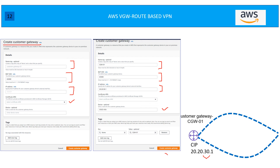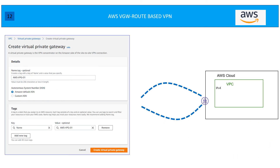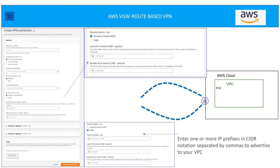The next thing you need to create is the Virtual Private Gateway. It's very simple — you put the name tag, for example awsvpg-01, and for the ASN you can either leave it to the default or mention your customer ASN. Add a tag if you want, then click Create VPG.